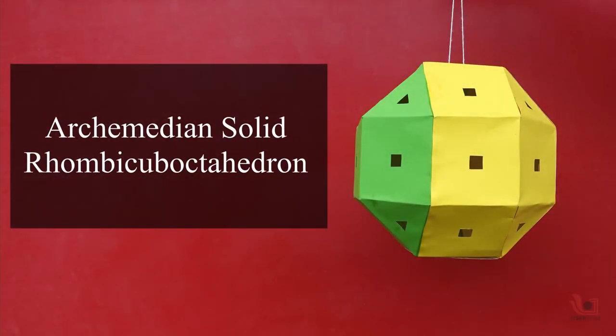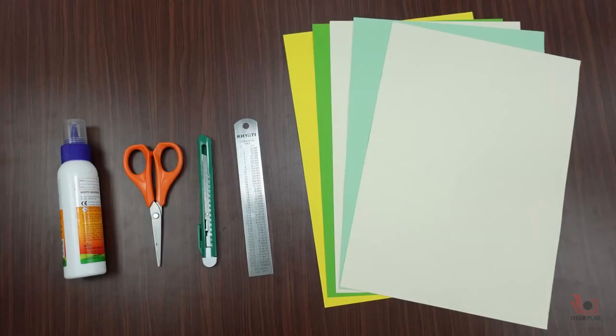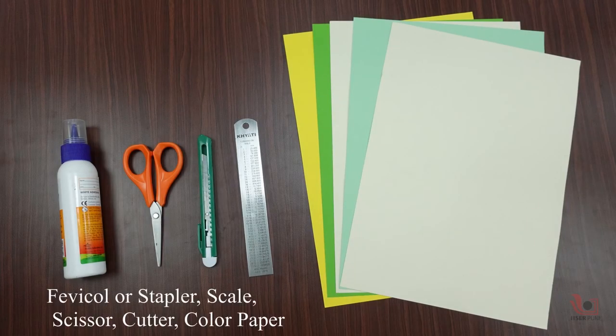Today, we will learn how to make a Rhombicuboctahedron Archimedean solid. For that, we need some colored paper, scale, glue or stapler, scissor, cutter, etc.